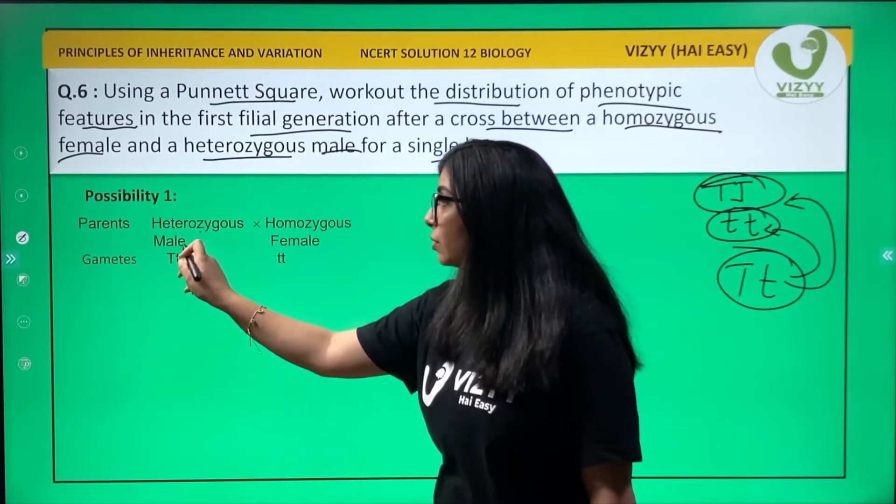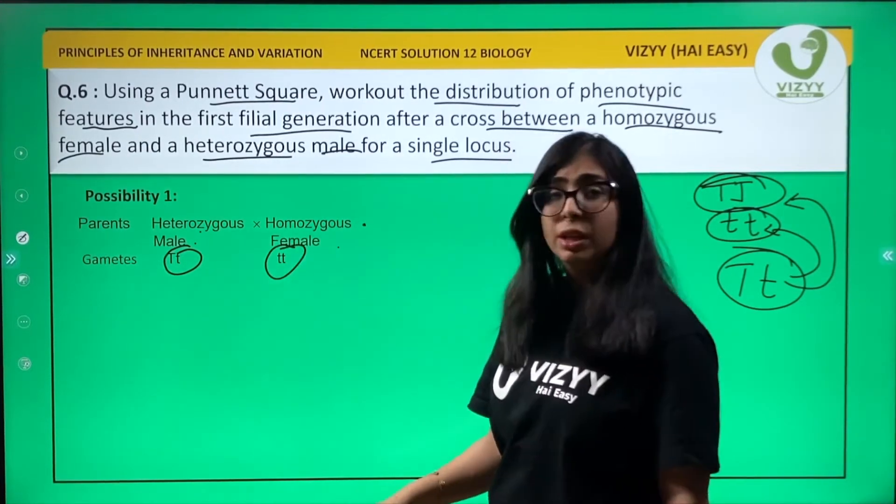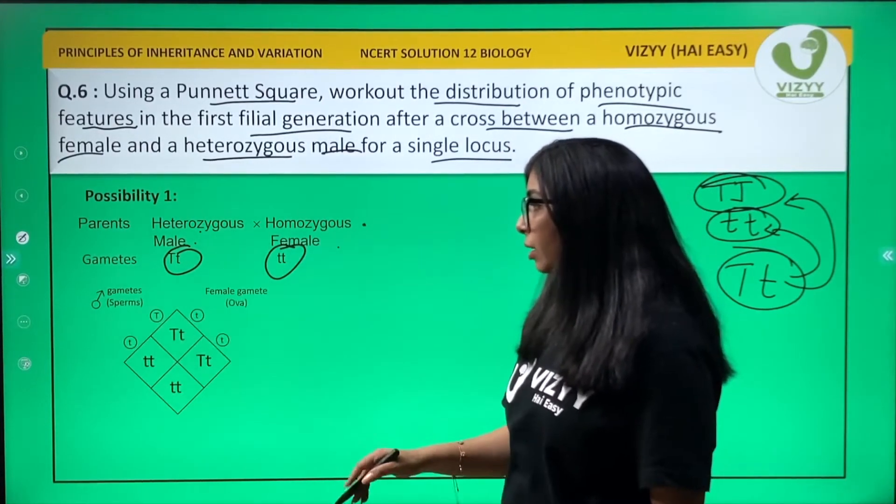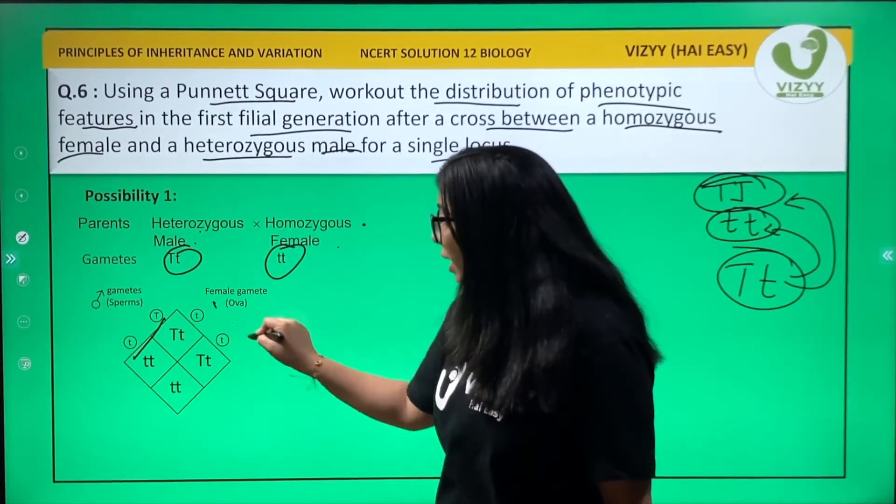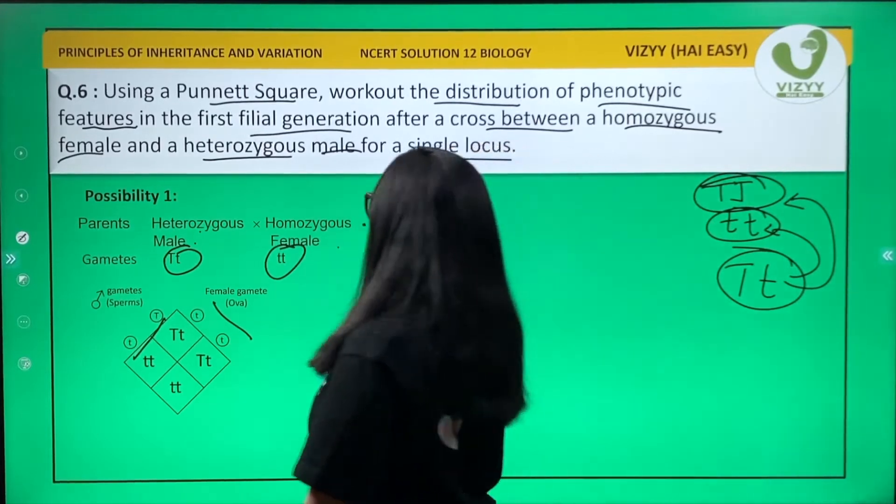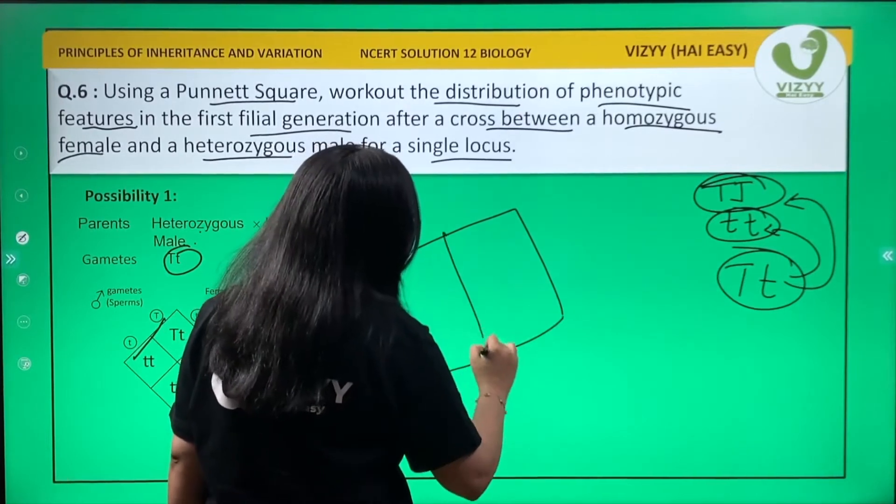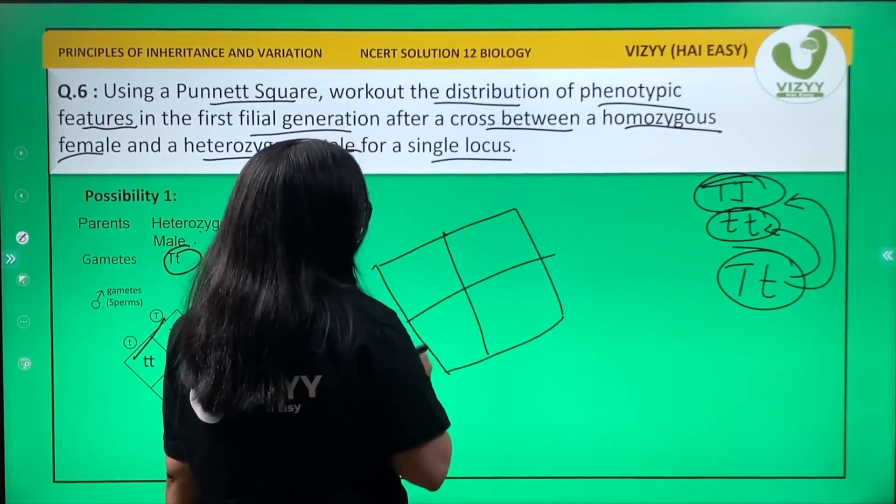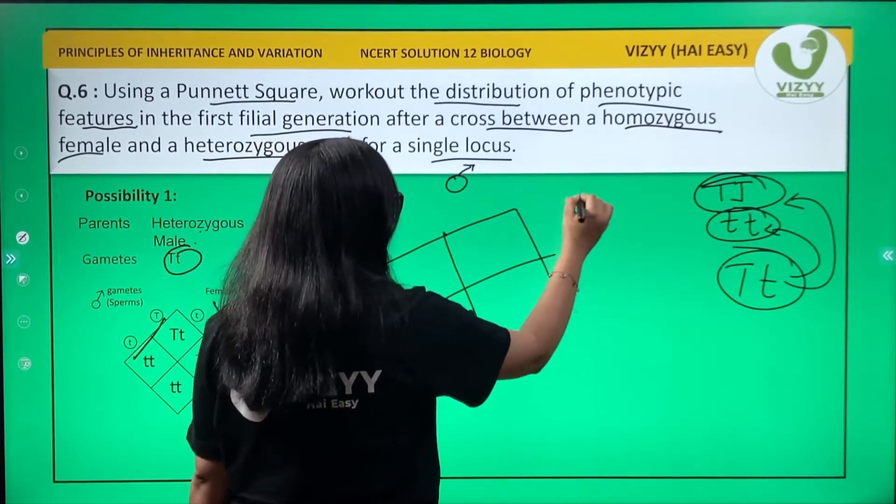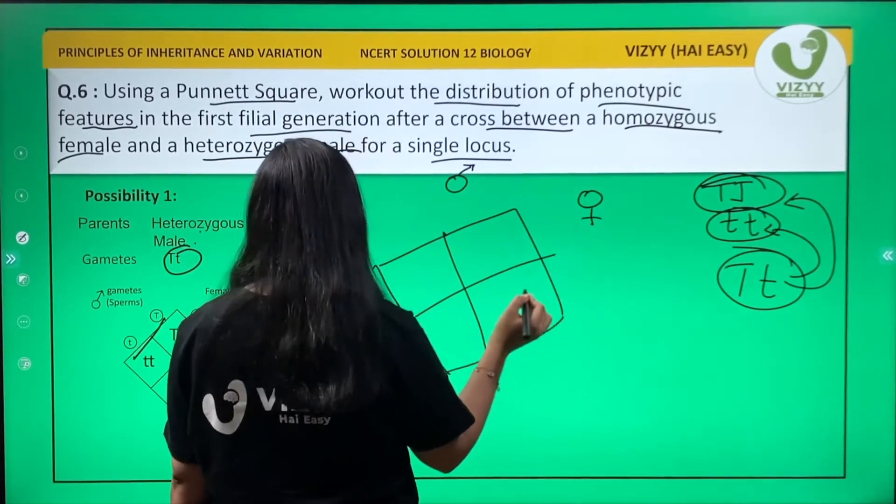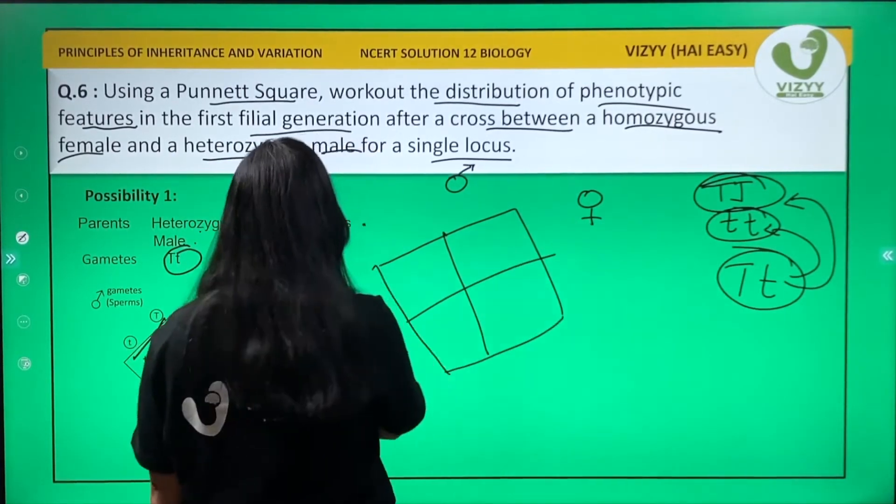Heterozygous male produces these gametes, homozygous female produces these gametes. Now forming the Punnett square - one side is male gametes, the other side is female gametes. Let's start drawing. This is your Punnett square. This is the male side and this is the female side.